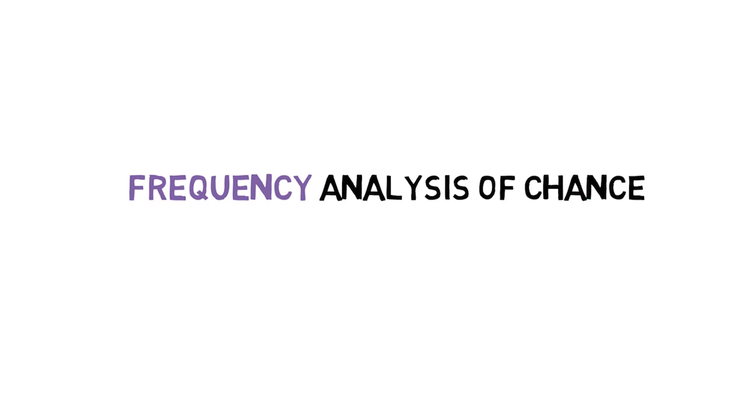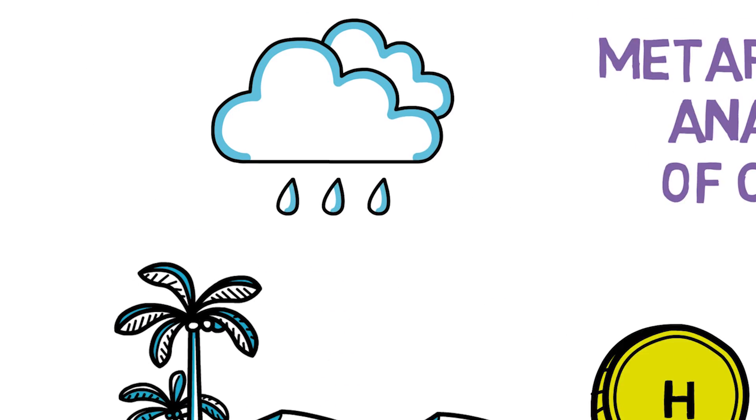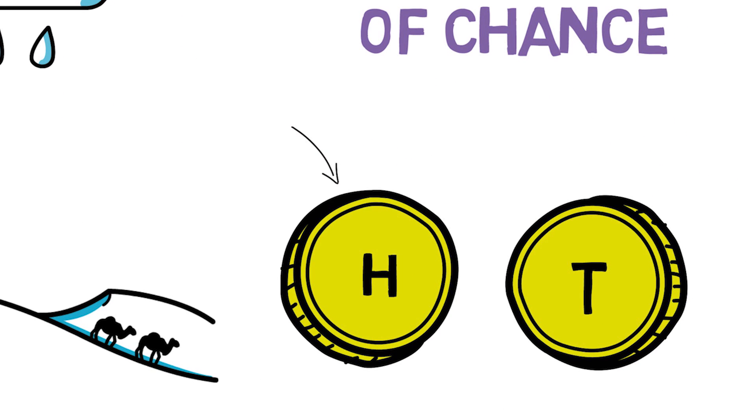One very natural thing to think is that chances are frequencies. What it means to say that the chance of it raining in the Mojave tomorrow is very low is that it very rarely rains in the Mojave. And what it means to say that the chance of this coin landing heads is one-half is that coins like this land heads roughly half the time.